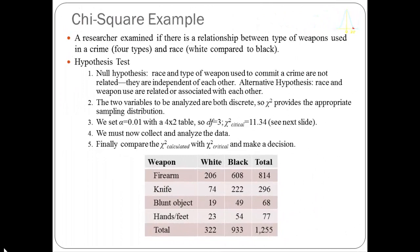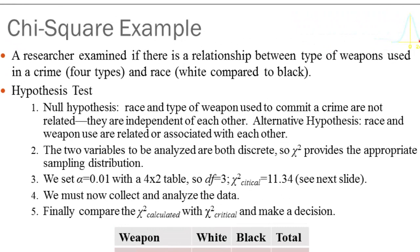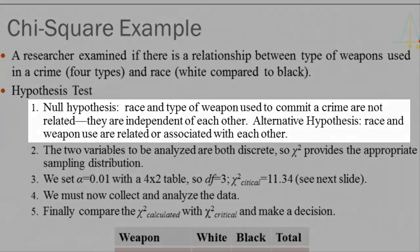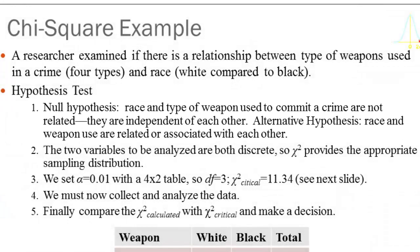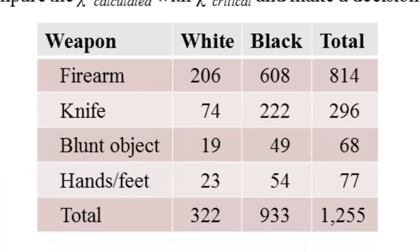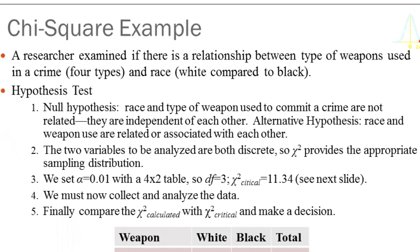Here's our first example. Data were collected by a researcher that looked at the type of weapon used to commit a crime and whether the criminal was white or black. Our null hypothesis is that race and type of weapon used to commit a crime are not related — that they're independent of each other. The alternative hypothesis is that race and weapon used are related or associated with each other. Race is measured as a discrete dichotomous non-orderable variable, and weapon type has several categories: firearm, knife, blunt object, hands and feet — also a discrete non-orderable measurement. When we look at the intersection of two discrete variables, chi-square is the appropriate sampling distribution to use.